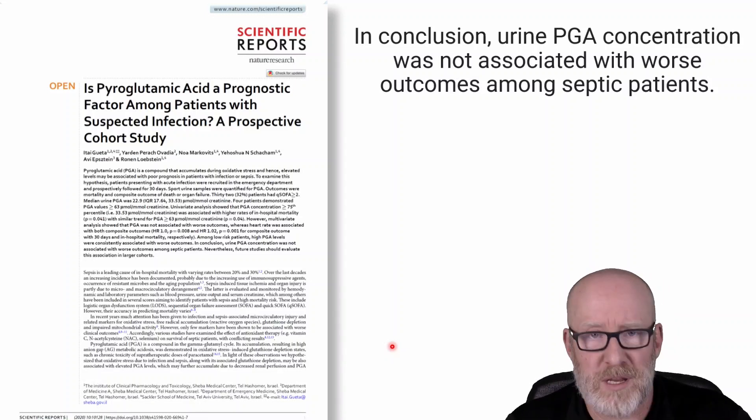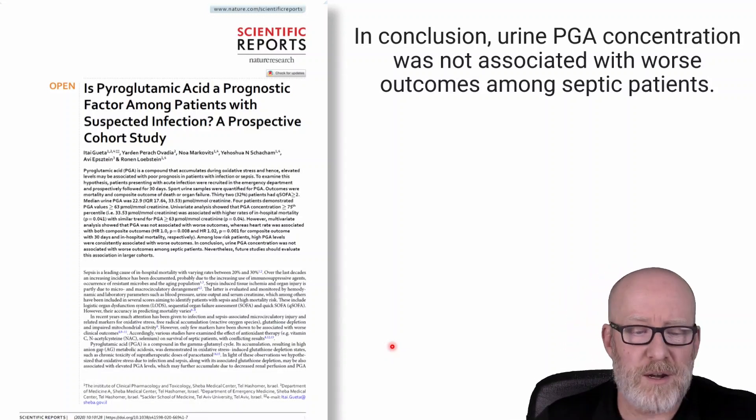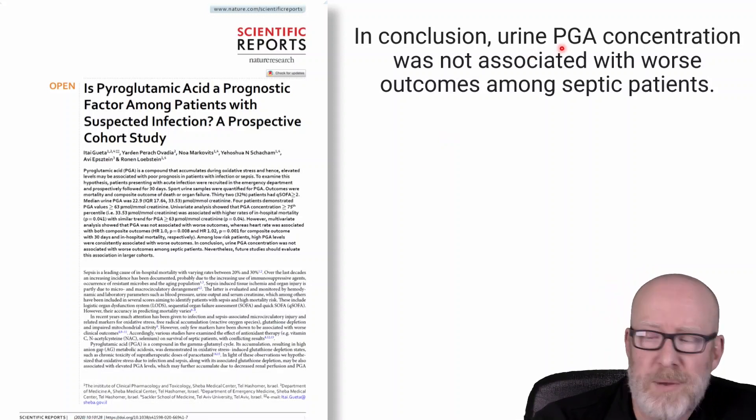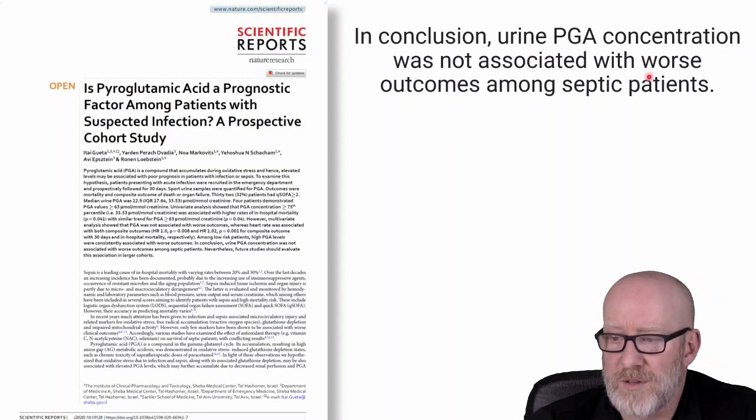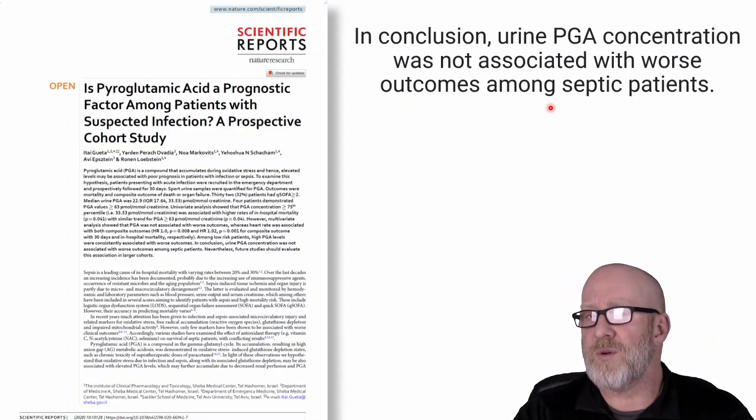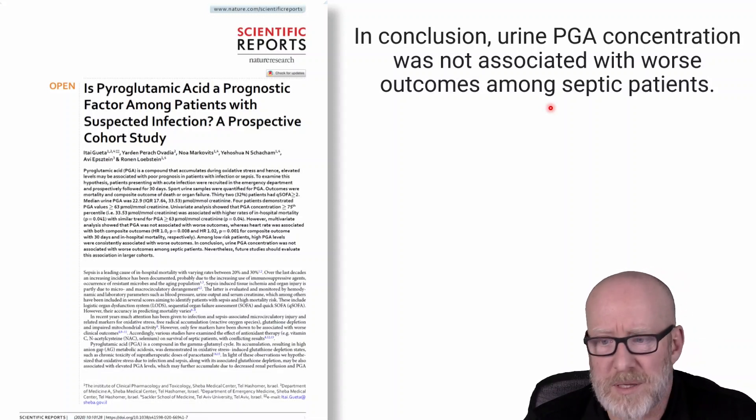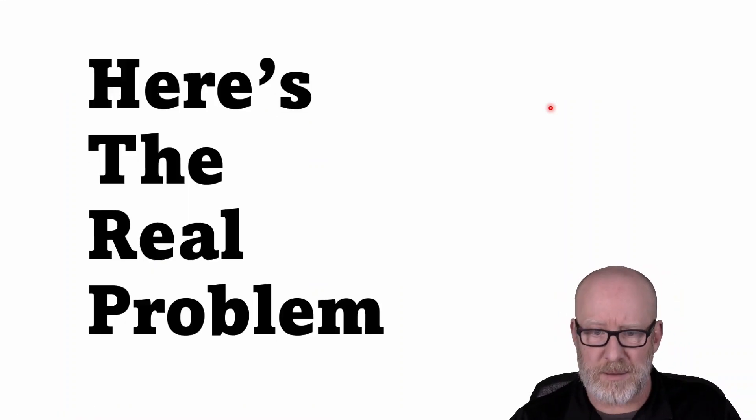The researchers suspected that maybe it had to do with amino acid intake, things like glycine. That would make sense. So that's kind of interesting. This particular paper looked at pyroglutamic acid, looking at it as a prognostic indicator for people that had an infection. Now in this case, they use septic patients. That's not a suspected infection. That's kind of a big one. But they showed that urinary pyroglutamic acid concentration was not associated with worse outcomes among septic patients. And one would think that if you had an infection, especially sepsis, that perhaps your glutathione would go down, maybe being used up for oxidative stress. But in fact, it didn't really amount to much.